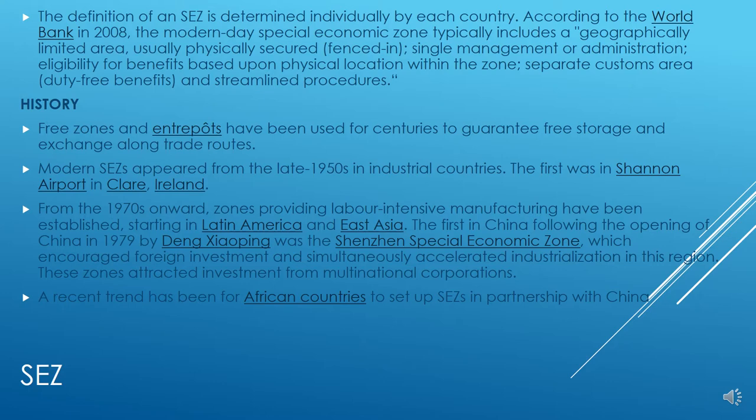The first in China, following the opening of China in 1979 by Deng Xiaoping, was the Shenzhen Special Economic Zone, which encouraged foreign investment and simultaneously accelerated industrialization in the region. These zones attracted investment from multinational corporations. A recent trend has been for African countries to set up special economic zones in partnership with China.